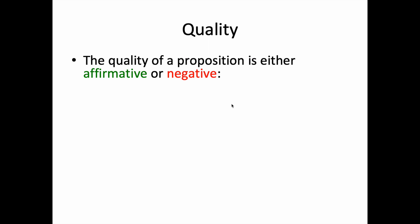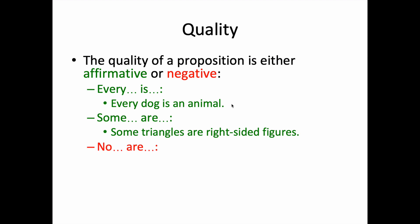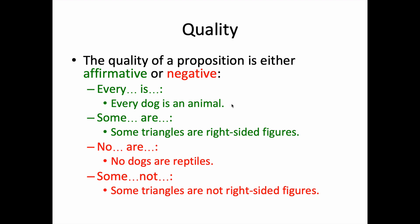The quality of a categorical proposition is the claim's affirmative or negative status. Affirmative examples: 'every dog is an animal,' 'some triangles are right-sided figures.' The affirmative claims a positive relation between the subject and predicate classes. A negative claim is also either universal or particular. For example: 'no dogs are reptiles,' or 'some triangles are not right-sided figures.' Combined, quantity and quality tell us how many of the class in question we're talking about and in what way.